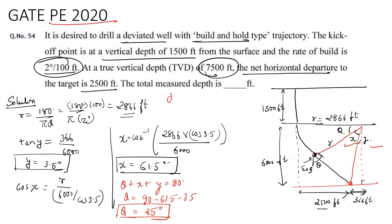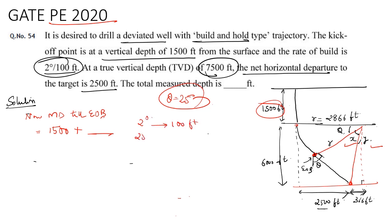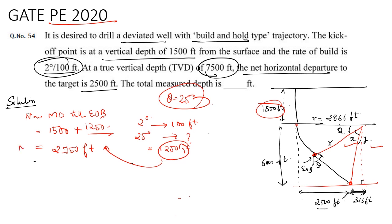Once I got theta as 25 degrees, let's calculate the measured depth till end of build. This point is my end of build point. The measured depth till end of build will be equal to 1500 feet plus the arc length. We know for 2 degrees we have 100 feet, so for 25 degrees that answer would be equal to 1250 feet. So my final measured depth would be 2750 feet — this is my measured depth at the end of build.